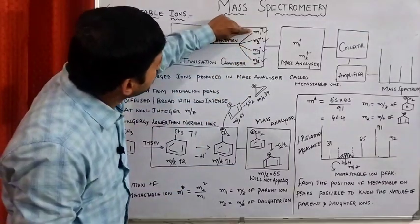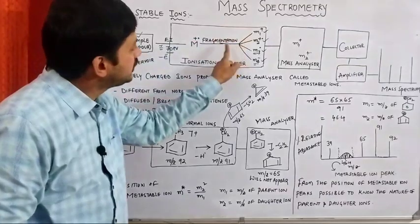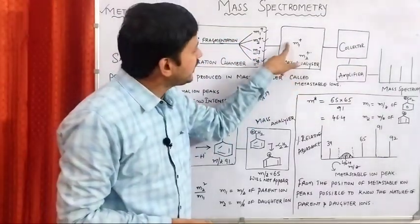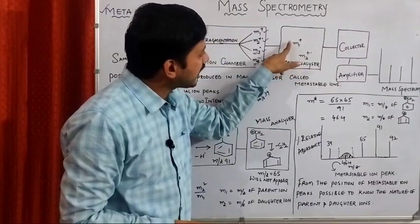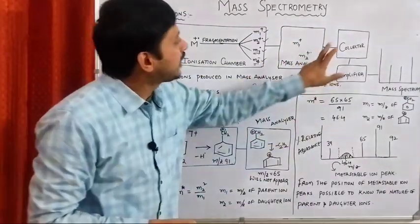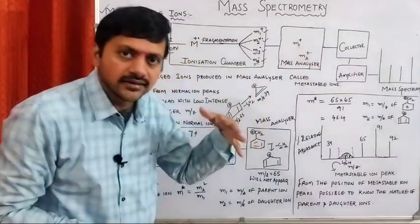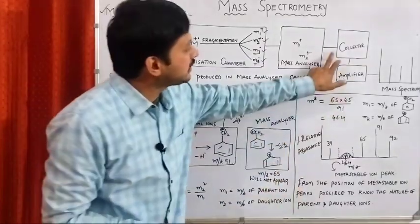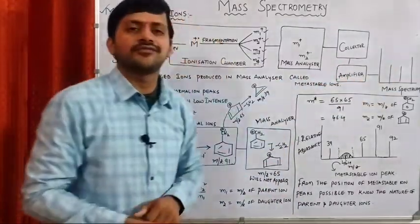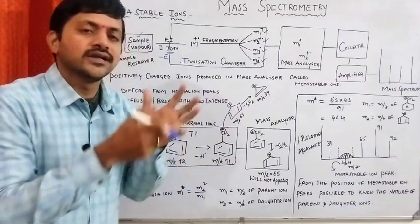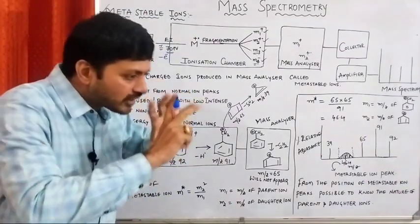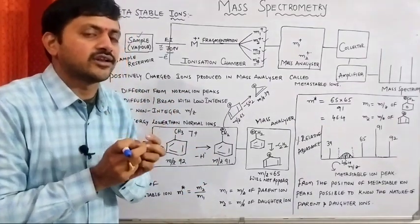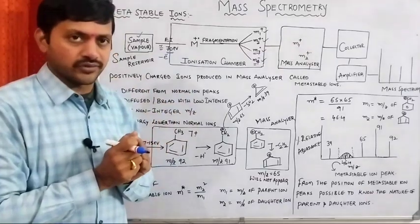The remaining cations and radical cations enter into the mass analyzer. Depending upon the velocity of the cations and radical cations, the collector collects them one by one. This is then subjected to the amplifier, where we observe the particular mass spectra. This is the entire process of the mass spectral analysis of a particular compound.